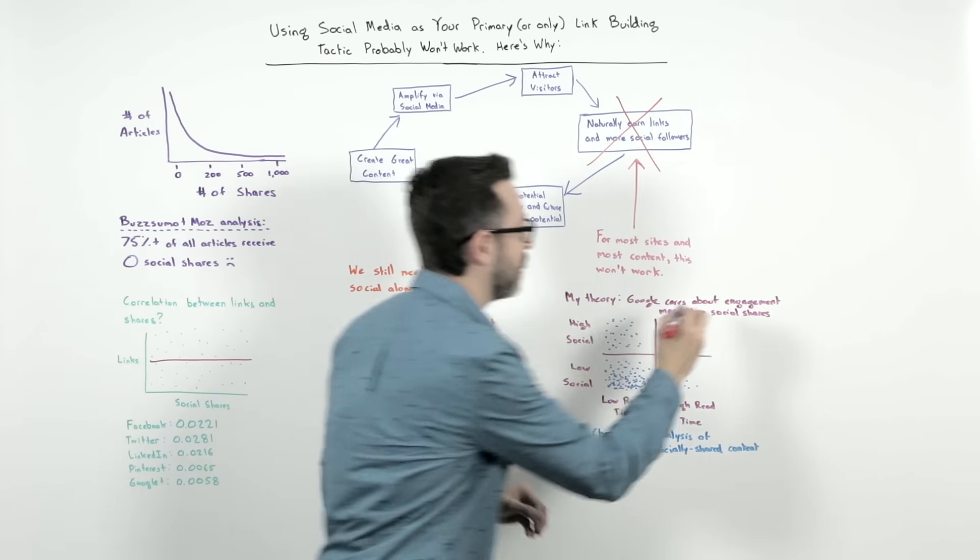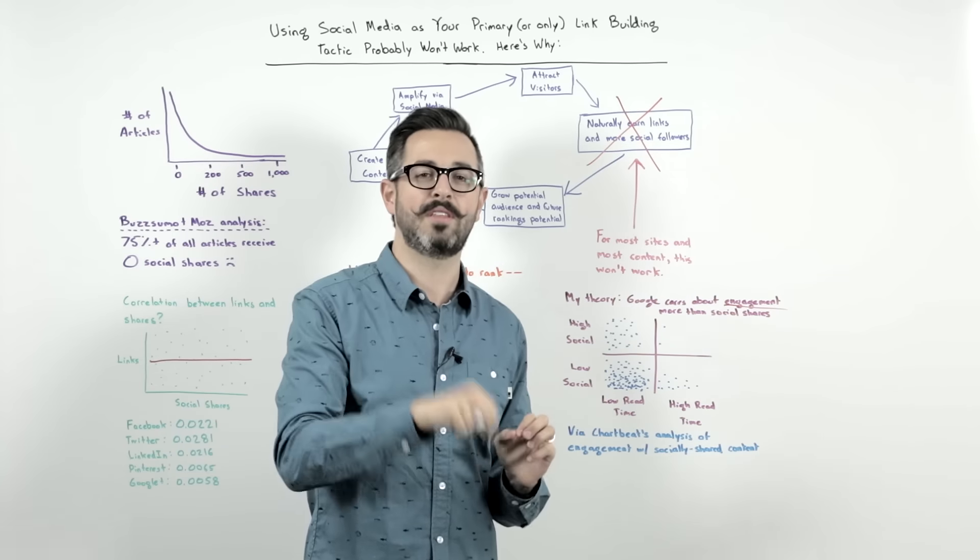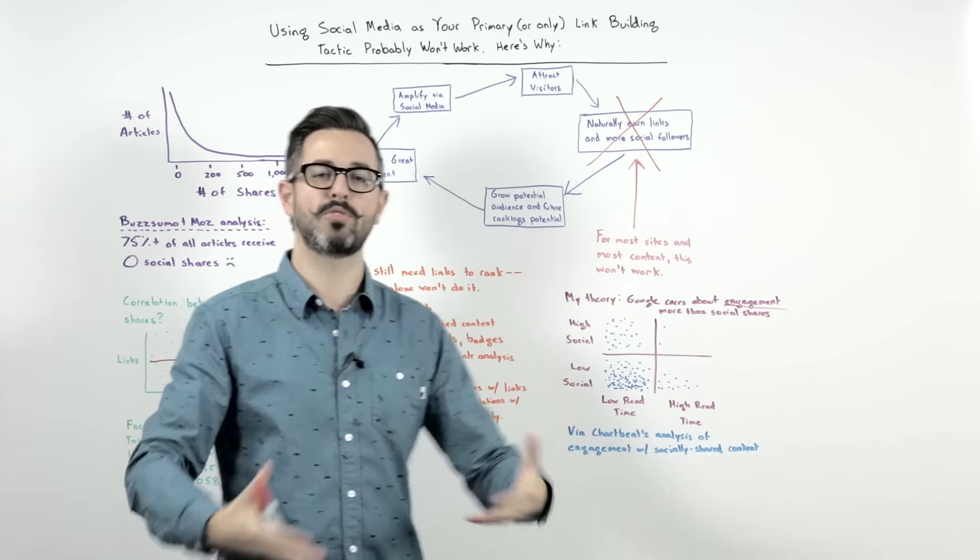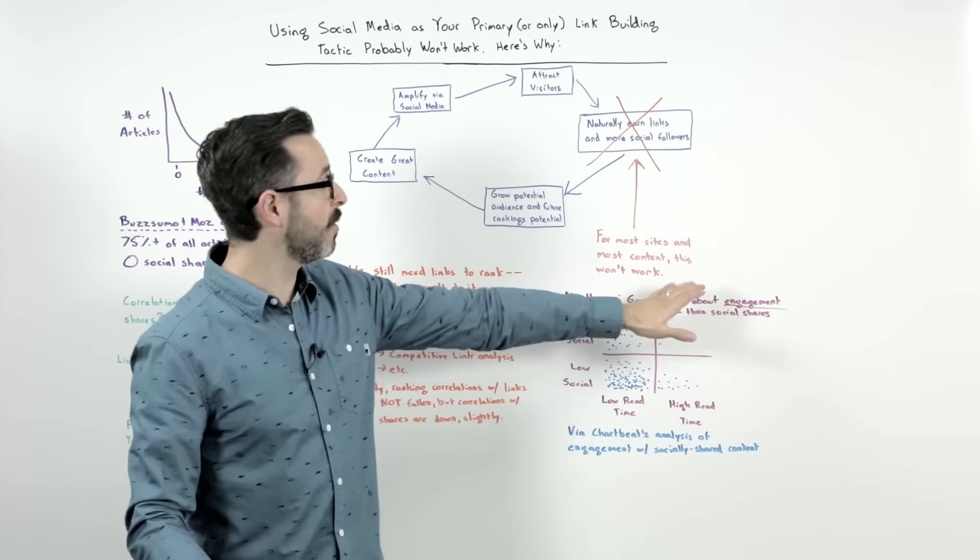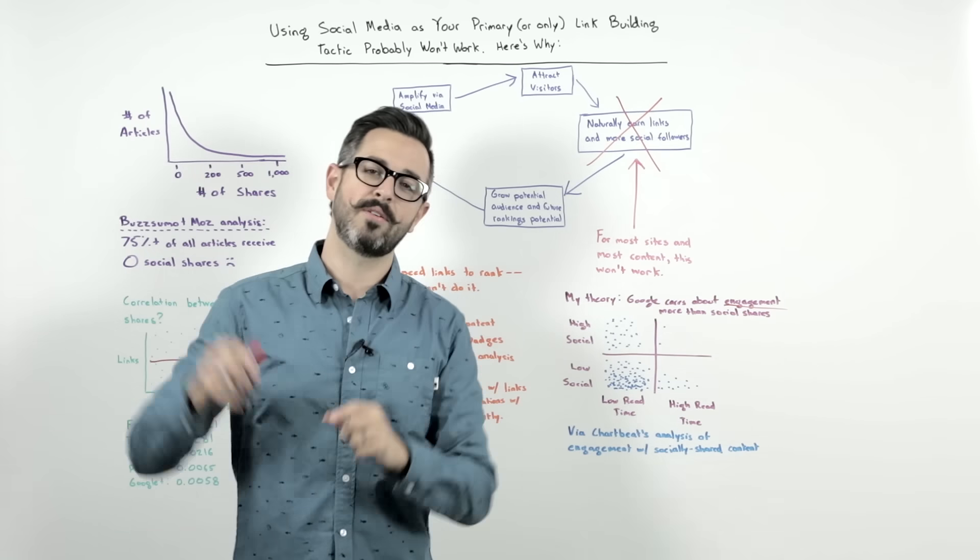That's just the way of the web. I think Google cares much more about the engagement than they do about the social share counts themselves. And so you can see lots of things with social shares not performing well. But once they start to get engagement, and start to earn links from that engagement, now they're suddenly ranking.